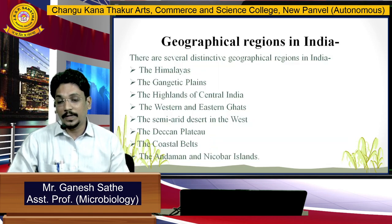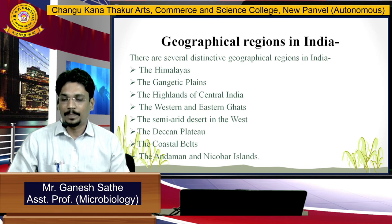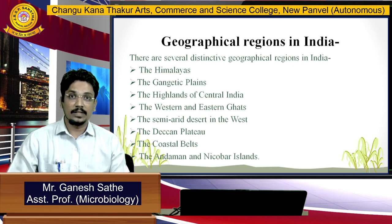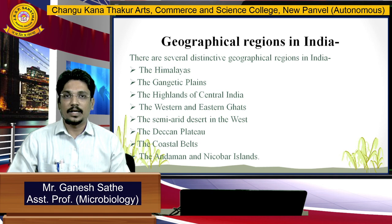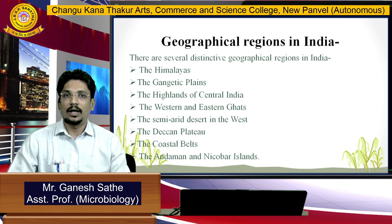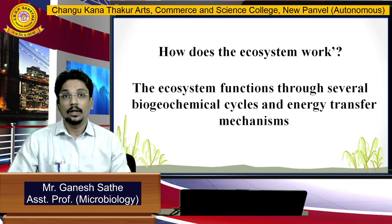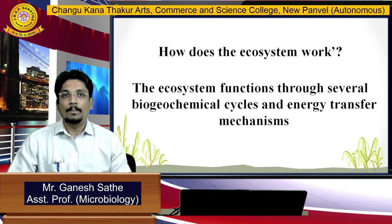Now coming to the geographical regions found in India. There are several distinct geographical regions: starting from the north, we have the Himalayas, then the Gangetic Plains, the highlands of Central India, the Western and Eastern Ghats, semi-arid deserts in the west, the Deccan Plateau, coastal belts, and the Andaman and Nicobar Islands. Geographically, India is a diverse country. Our ecosystem functions through several biogeochemical cycles and energy transfer mechanisms.